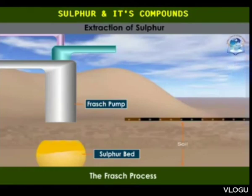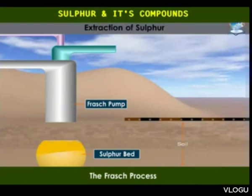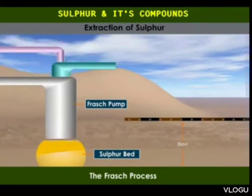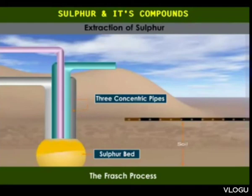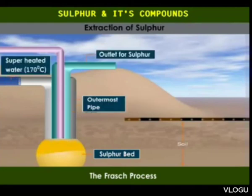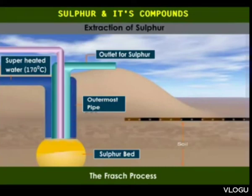The Frasch process is based on the fact that sulfur has a comparatively low melting point. The Frasch pump, consisting of 3 concentric pipes, is sunk deep into the sulfur bed. Superheated water at about 170 degrees Celsius under pressure is pumped into the outermost pipe.